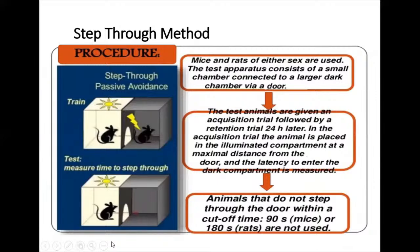For anti-Alzheimer activity, the step-down passive avoidance method was used. It uses a small chamber connected to a larger one. Test animals are given an exhibition trial in which the animal is placed in an illuminated compartment at maximum distance from the door and the latency to enter the dark compartment is measured. The threshold was 90 to 180 seconds. Animals that did not cross the threshold were rejected.